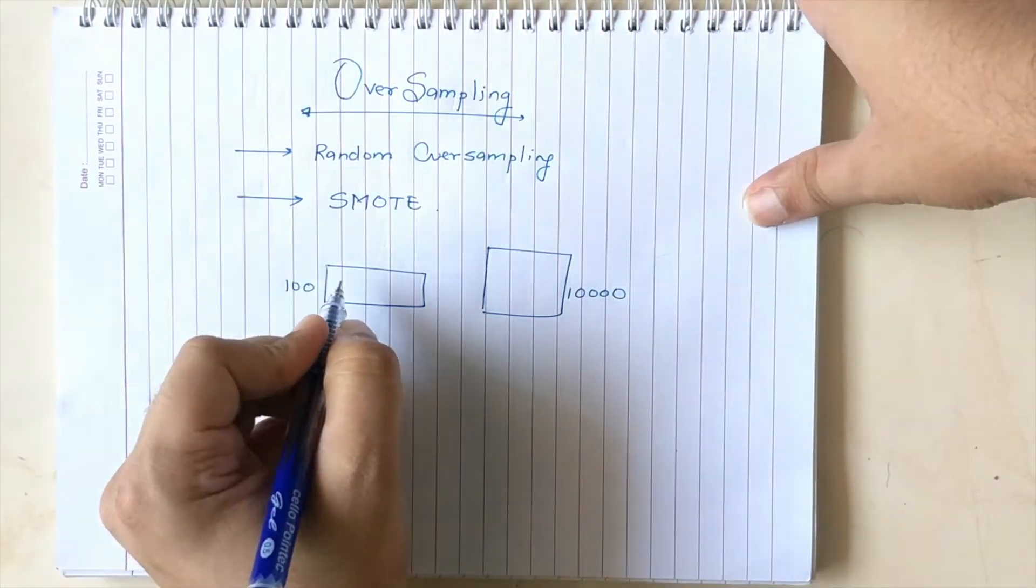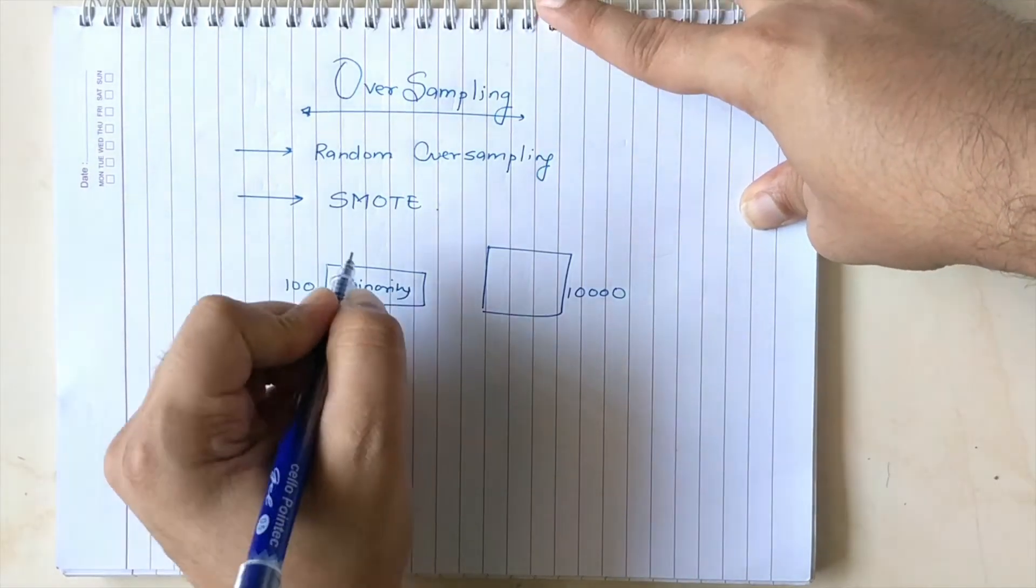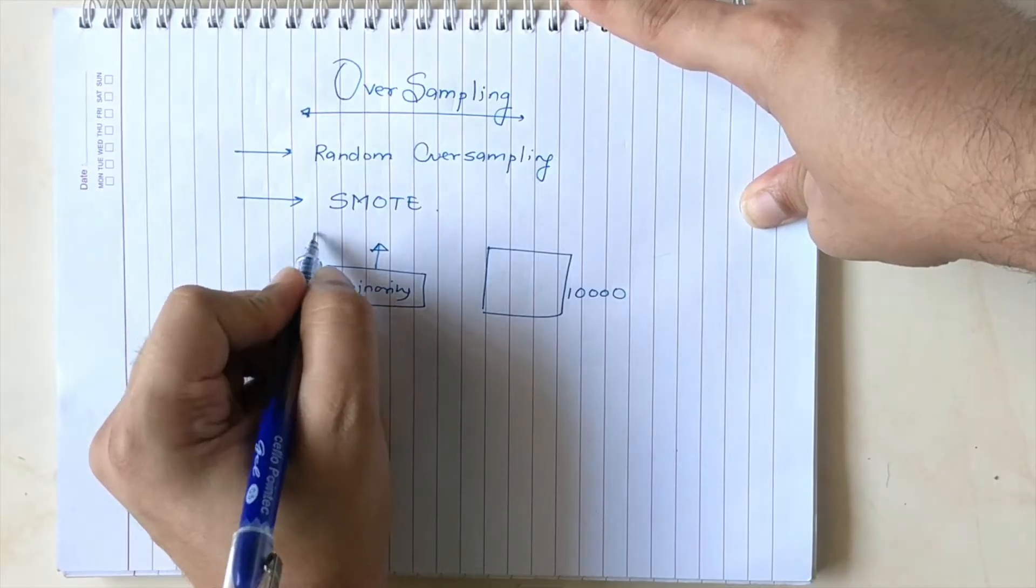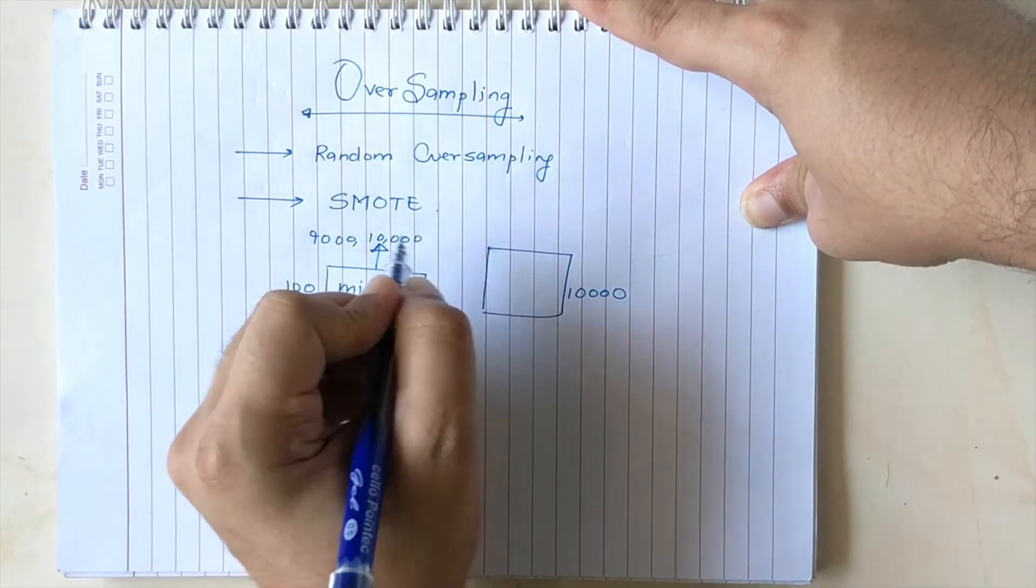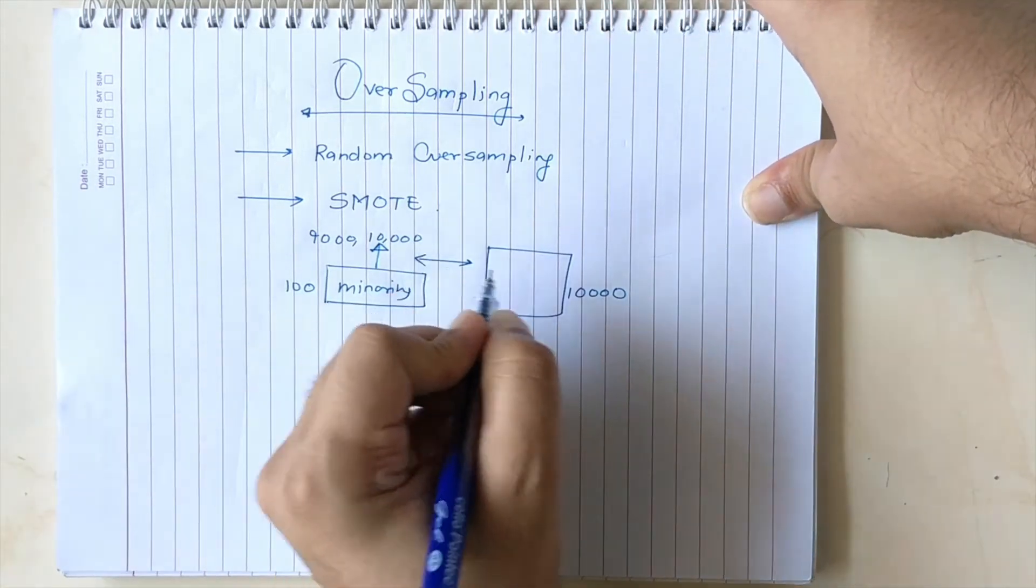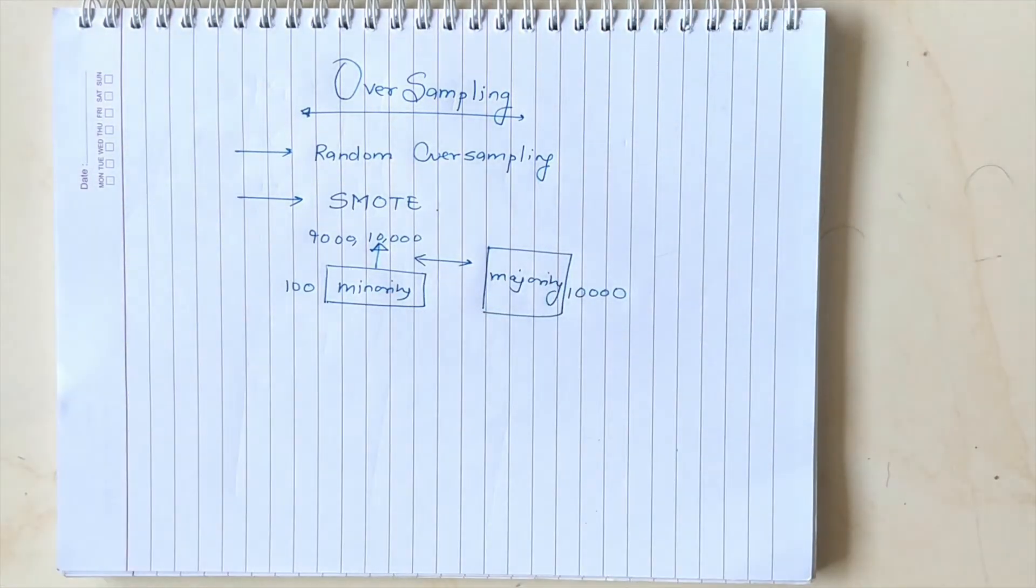then you should increase your minority class sample from 100 to say 9,000 or 10,000 so that the length of both your majority and minority class add up. That's the bare minimum idea of how oversampling is achieved.